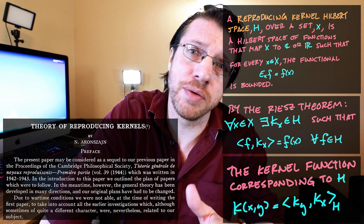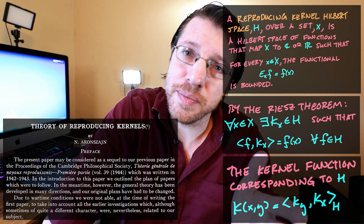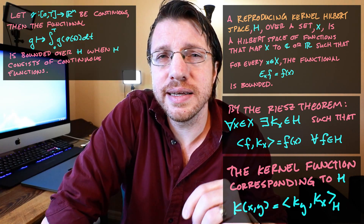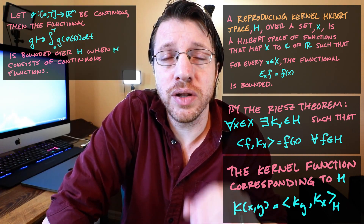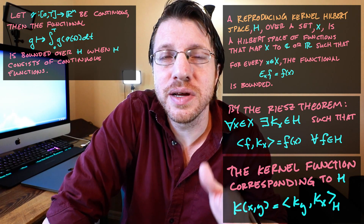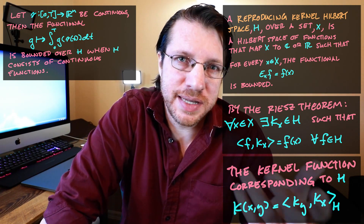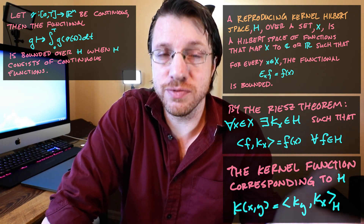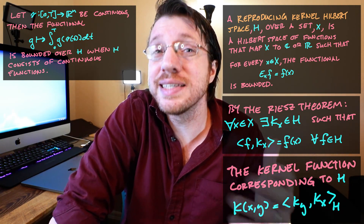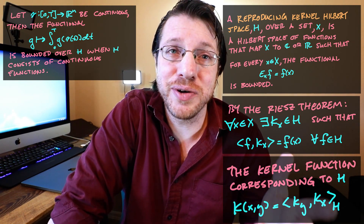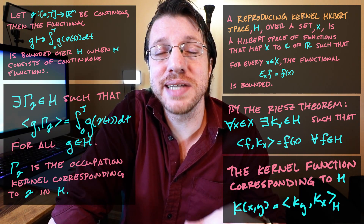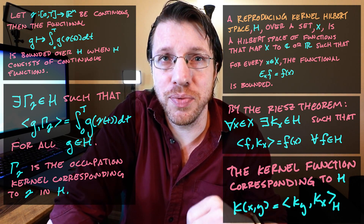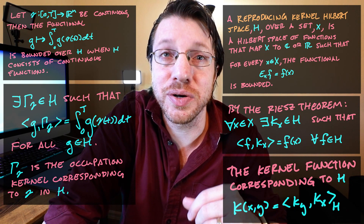Occupation kernels themselves reside inside a reproducing kernel Hilbert space, and they represent the functional that is integration along a trajectory after composition with a function from the space. If the space is continuous — as most reproducing kernel Hilbert spaces are — and the trajectory itself is continuous, then this is a bounded functional. And if there is a bounded functional, the Riesz representation theorem says there is a unique function inside the space that represents that functional through the inner product. That is exactly what occupation kernels are.